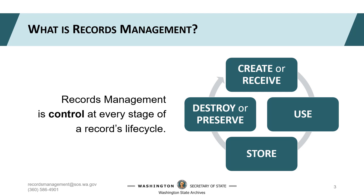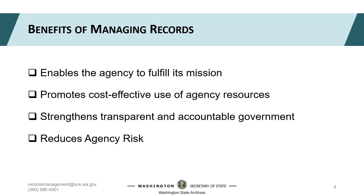Understanding retention requirements, retaining records in the appropriate format for the approved amount of time, and protecting essential records are all necessary to fulfill your obligations to your agency and the public. The last stage in a records lifecycle is destruction or preservation. The best part of destroying non-archival records and transferring archival records is that your agency is no longer responsible for that material — you can point to the DAN that gives you the authority to destroy or transfer. The measurable decrease in records volume will increase your job satisfaction.